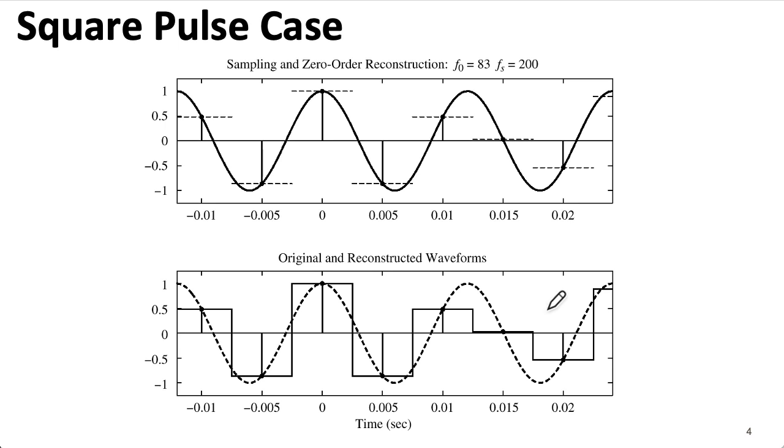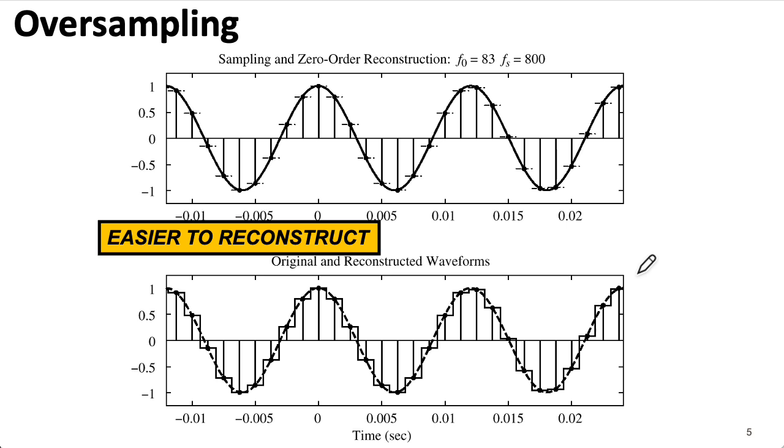And if you build an ideal filter, which we'll talk about a little bit later, you can exactly reconstruct the sinusoid by filtering these stair-steps. Now, remember I said ideal filter. That filter is actually impossible to build in practice. So there may be a good reason to oversample. So here we're sampling at 800 hertz.